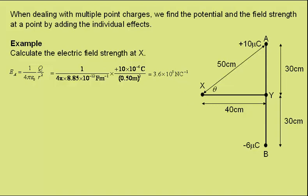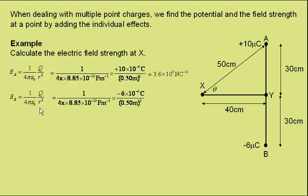We can do the same to find the electric field strength due to charge B using the same formula, but now charge B is minus 6 times 10 to the minus 6 coulombs. The separation is again 0.5 metres. This gives a field strength of minus 2.2 times 10 to the 5 newtons per coulomb.